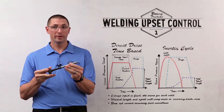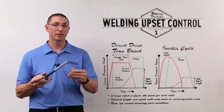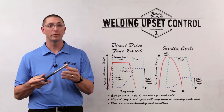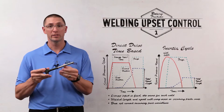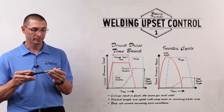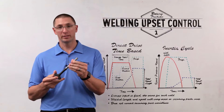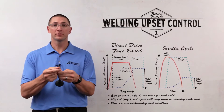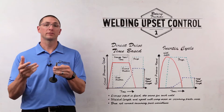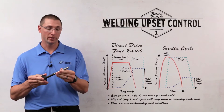If I had perfect incoming parts and I imparted the same amount of energy into every weld, then I would get very consistent upset every time I weld this part. But you rarely have perfect incoming parts. I can have differences in area, and those differences in area will affect how much energy is converted.